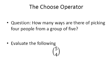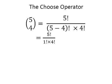Now let's find how many ways there are of choosing four people from a group of five — evaluate five choose four. We have five people to choose from, so 5 factorial on top. We choose four, and five minus four is one, giving us 5 factorial divided by 1 factorial times 4 factorial.